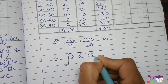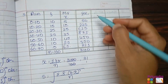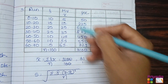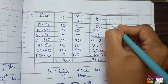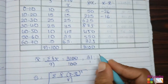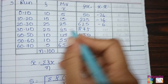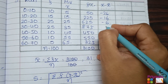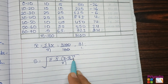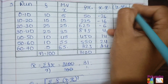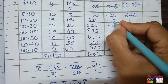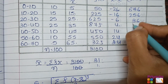Now use the standard deviation formula: sigma = sqrt[sigma f(x - x̄)² / n]. The next column is x minus x̄. x̄ is 31. So: 5 minus 31 = -26, 15 minus 31 = -16, 25 minus 31 = -6, 35 minus 31 = 4. Continue for the remaining values. Since we square them, negatives become positive.